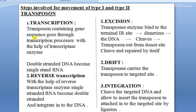Next are the steps involved in the movement of type 1 and type 2 transposons. Type 1 transposons follow transcription and reverse transcription, which is why they are called retrotransposons. In the first step — transcription — the transposon-containing gene sequence undergoes transcription with the help of transcriptase enzyme, converting double-stranded DNA into single-stranded RNA.